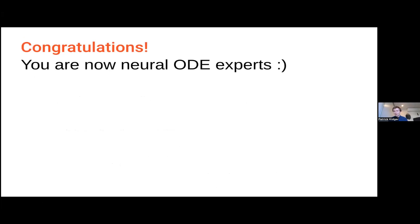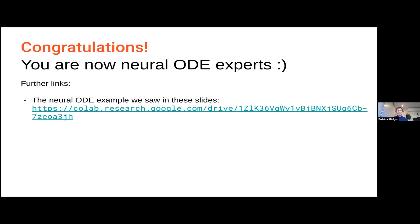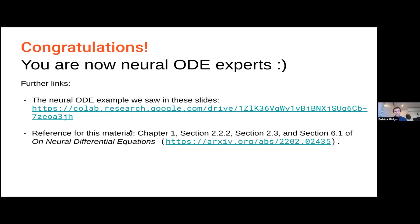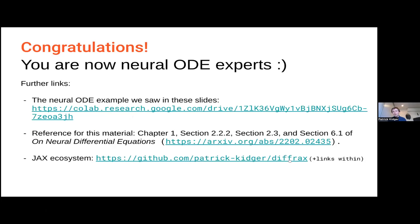That brings me to the end of my talk. Congratulations — you now know everything there is to know about neural ODEs. For further links: the example I showed is all implemented in Diffrax and Equinox in the JAX ecosystem, and that code is all available. For references, I'm pointing you at my thesis as a convenient textbook on the topic. For more on the JAX ecosystem, look at the differential equation solving library Diffrax as a starting point — it has many links within it to the rest of the ecosystem. Thank you very much for having me and I'll take any questions now or if you want to message me later.